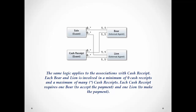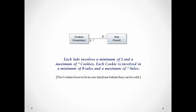Each bear and lion is involved in a minimum of zero cash receipts and a maximum of many cash receipts. Each cash receipt, however, requires one bear to accept the payment and one lion to make the payment. Now let's look at the sale event and the cookie resource. Each sale involves a minimum of one and a maximum of many cookies. Each cookie is involved in a minimum of zero sales and a maximum of many sales. The zero next to the sale event indicates that cookies have to be in our database before they can be sold.